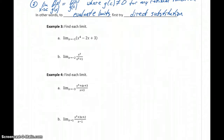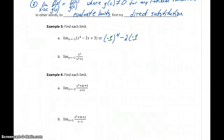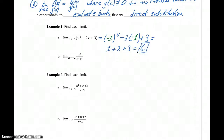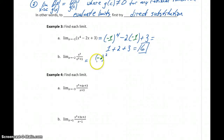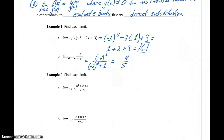Let's use that approach to evaluate a few more limits. In Example 3a, we've got a polynomial function, so we can evaluate this just by using direct substitution. We get (-1)⁴ - 2(-1) + 3, which gives us 1 + 2 + 3, or 6 as our limit. In part b, we've got a rational function, so we try direct substitution: (-2)² over (-2)² + 1 gives us 4 over 5. We don't get a 0 in the denominator, so 4/5 is our limit.